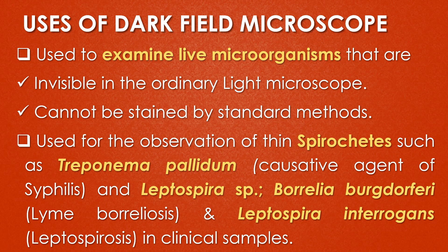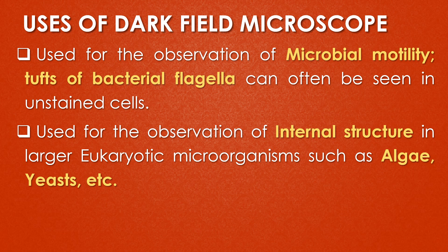Regarding the uses of the dark field microscope, it is used to examine live microorganisms that are invisible in the ordinary light microscope and cannot be stained by standard methods. It is also used for the observation of thin spirochetes such as Treponema pallidum, the causative agent of syphilis, Leptospira species, Borrelia species which is the causative agent of Lyme disease, and Leptospira interrogans. It is also used for observation of microbial motility, as the type of bacterial flagella can often be seen in unstained cells.